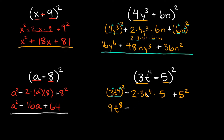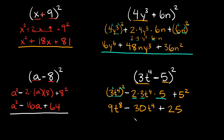And then we're subtracting the middle term: 2 times 3t to the fourth times 5. Combining like terms, 2 times 3 times 5 — that's 6 times 5, which equals 30 — so we have 30t to the fourth. Then we add 5 squared, which equals 25. There's nothing here I can combine, so this is the final answer: 9t to the eighth minus 30t to the fourth plus 25.